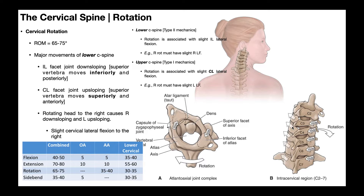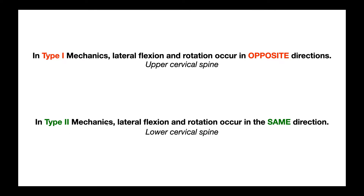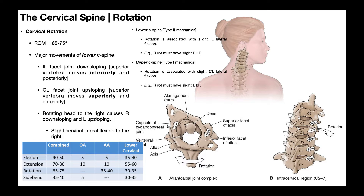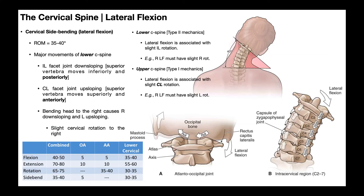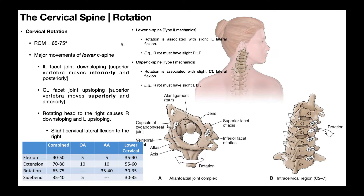Rotating the head to the right causes right down-sloping and left up-sloping. As a general statement: cervical rotation produces ipsilateral down-sloping and contralateral up-sloping. In the lower cervical spine, which follows type 2 mechanics, lateral flexion and rotation occur in the same direction. So with right rotation, we can't help but get a little bit of right lateral flexion. Just as lateral flexion can't occur without some rotation, rotation can't occur without some lateral flexion — and in the lower C-spine, they're always in the same direction.